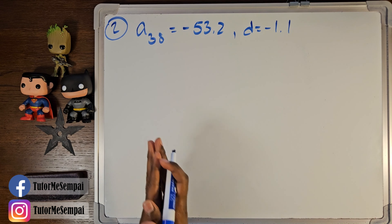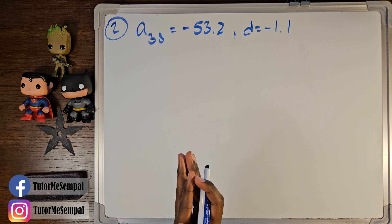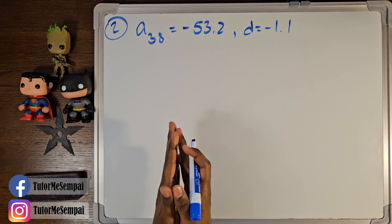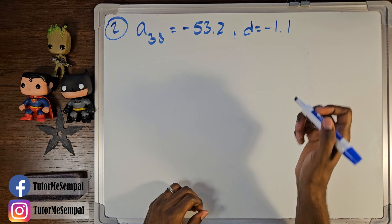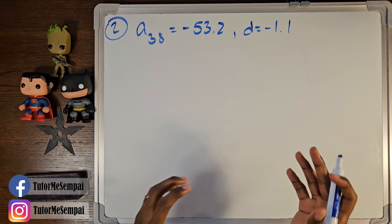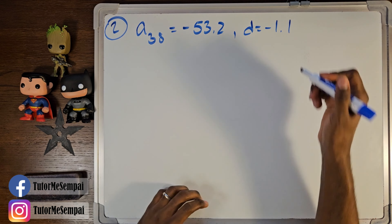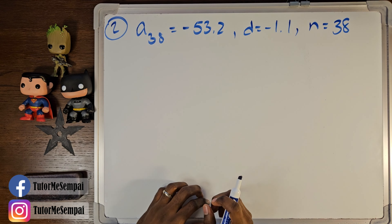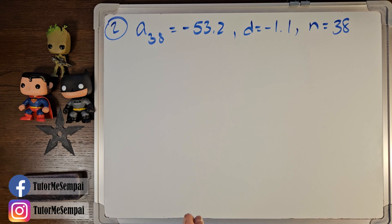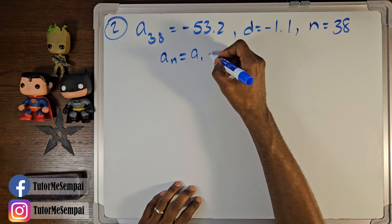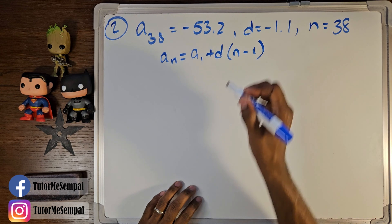In our second example for today, we have a₃₈ equals negative 53.2, and our d — our distance or difference between any two consecutive terms within our arithmetic sequence — is negative 1.1. We want to find our explicit formula given this little bit of information. We also know by extension that our n is going to be 38 for this question. So the first thing we want to do is write your general form of your explicit formula: aₙ = a₁ + d(n − 1).